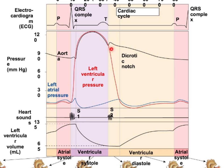At this point you get aortic valve closure — S2 or dub sound. When you listen to a heart, you hear lub-dub: AV valve closure is S1 or lub, aortic valve closure is S2 or dub. Then the T wave indicates ventricular repolarization. Isovolumic relaxation follows, getting ventricular pressure lower than atrial pressure, at which point the AV valves open for passive filling, until enough blood builds up to push back into the ventricles, close the AV valves, and start the cycle over.